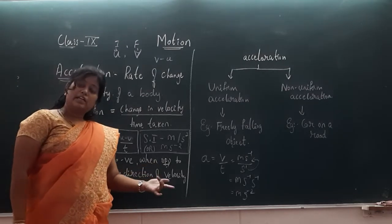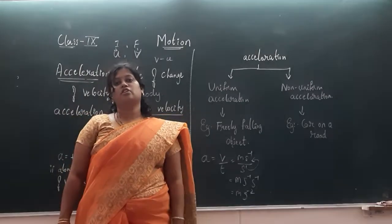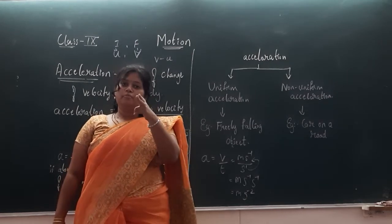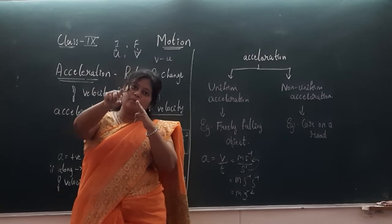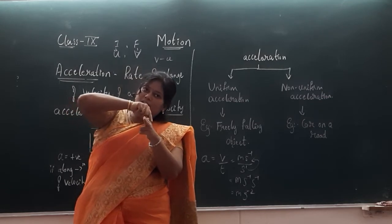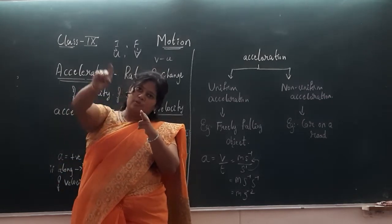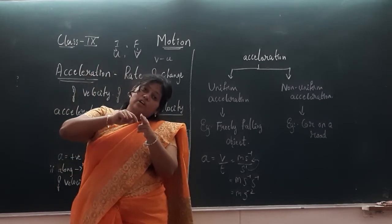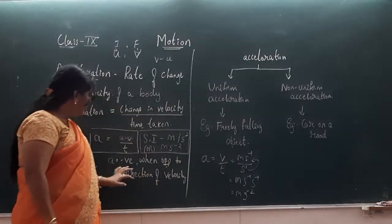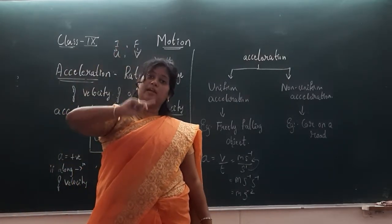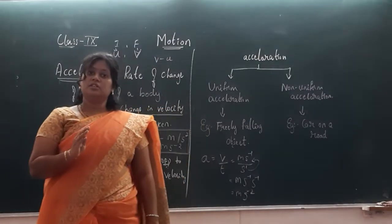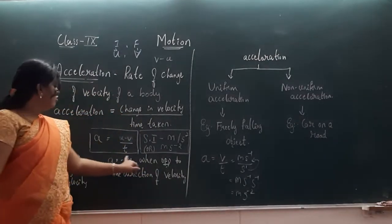Acceleration is negative when the direction of motion of the body is opposite to the direction of velocity. A best example is a gun. When you fire a bullet from the gun, the bullet moves in the forward direction. But the recoil of the gun is in the opposite direction. So both are in different directions — the velocity is in one direction while the recoil acceleration is in the opposite direction. If acceleration is opposite to the direction of velocity, acceleration is negative.